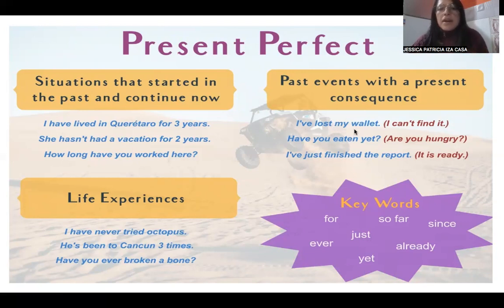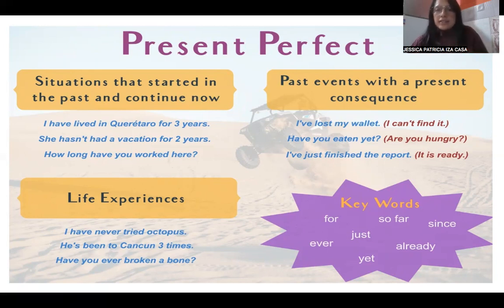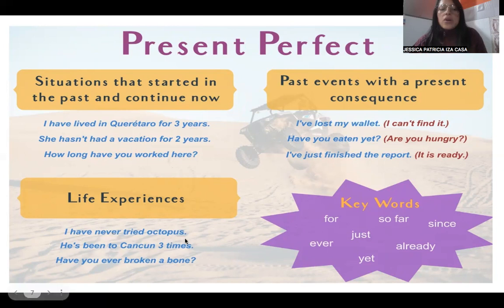For past events with a present consequence: 'I have lost my wallet.' This action was in the past but with a consequence now, because I can't find it. Also for life experiences: 'I have never tried octopus.'